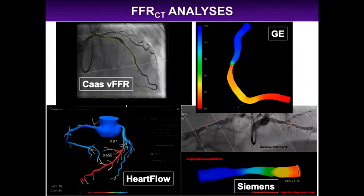HeartFlow isn't the only company involved in FFR CT analysis — others include CasCade, virtual FFR, GE, and Siemens — but HeartFlow is the only FDA-approved company. You get a color-coded image of the coronary artery: blue means normal flow, and the more red it is, the more reduced blood flow. A value greater than 0.8 is normal; this example shows 0.87 proximally, but as you go down the LAD it's 0.65, indicating more abnormal flow. It makes it really easy to visualize.